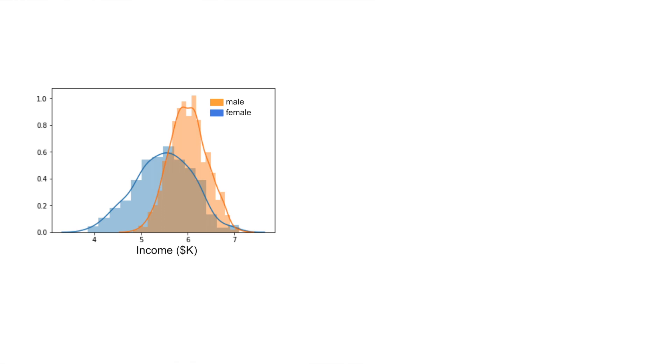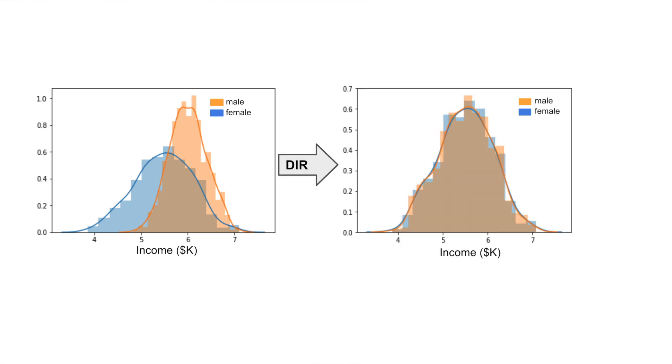Another reason for an unfair model is proxy variables. These are model features that are highly correlated or associated with protected variables such as race or gender. Other approaches look at repairing or removing this association between the protected variables and proxy variables. An example of such an approach is disparate impact removal.